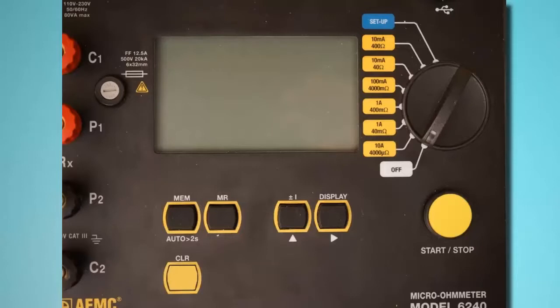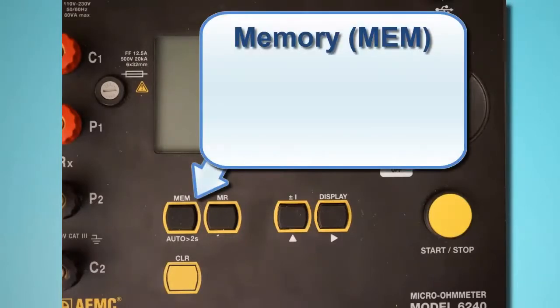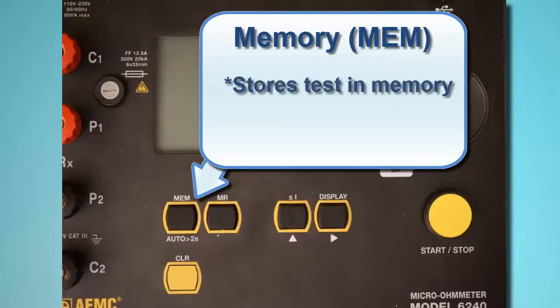Below the LCD are five function buttons. The memory button, labeled MEM, stores the test in the instrument's memory where it can be subsequently viewed on the LCD and downloaded to a computer running DataView. This button also initiates AUTO mode, which we explain later in this video.